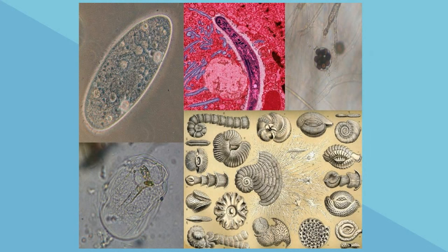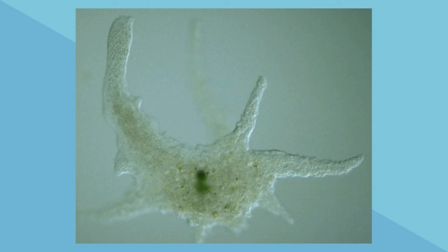Protozoa live in moist areas, infect the water, and other animals and humans drink the water and become infected. An amoeba is a single-cell protozoa. They are sometimes in the news because some of them can be brain-eating and result in death, but most just give you an upset stomach. They are also parasites.